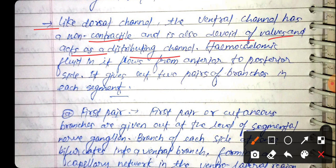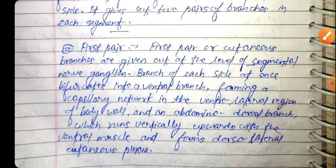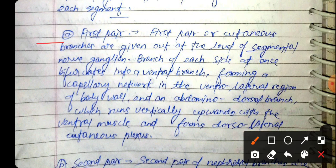The haemocoelic fluid in the ventral channel flows from anterior to posterior side. It gives out two pairs of branches in each segment. The first pair consists of cutaneous branches given off at the level of the segmental nerve ganglion.